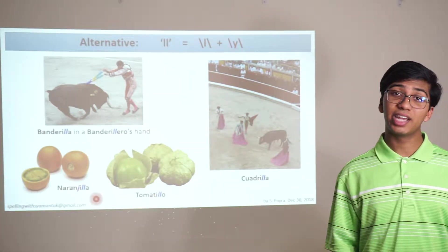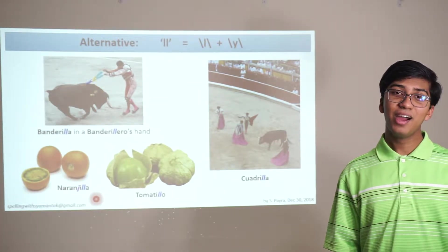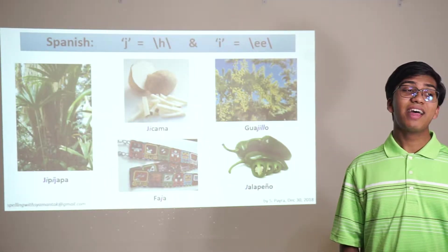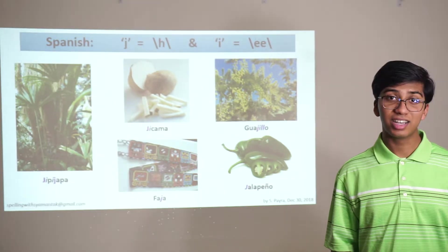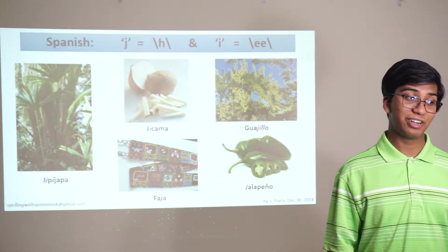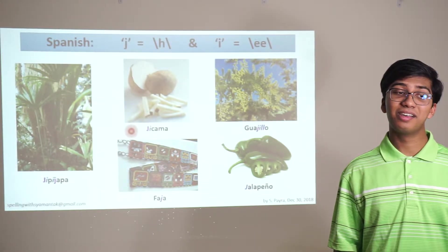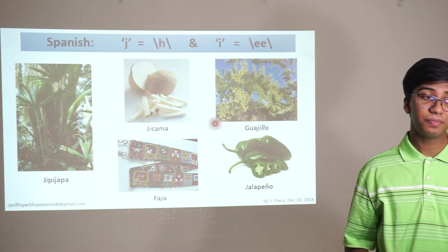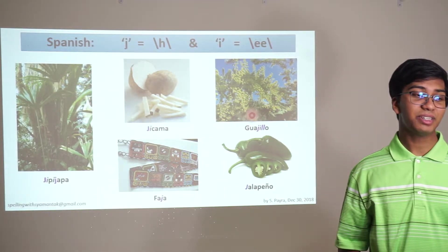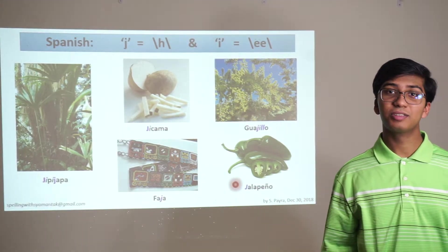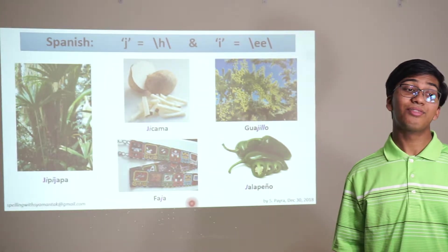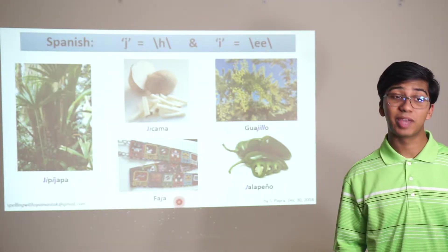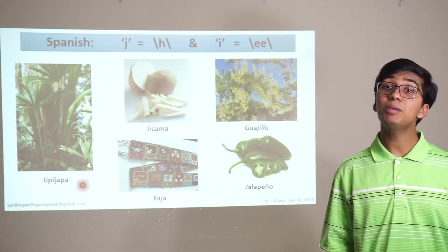In Spanish, the J sound — or the H sound — is often spelled with a J. So jicama, this root vegetable. You have guajillo, which is on that tree. You have jalapeños — you might be familiar with this chili pepper. You have faja, a wide bright sash worn around the waist by Spaniards and some Latin Americans. And you have hipijapa — it's a fun plant, and the fiber from that plant is used to make Panama hats.